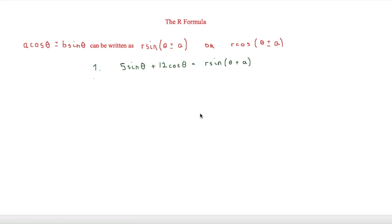This is I'm Stark and in this video we are looking at the R formula. This is basically where we can find equivalent forms for a cos theta plus b sin theta, and this can be written as either r sin(theta ± a) or r cos(theta ± a). The best way to look at this is by looking at a question.